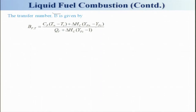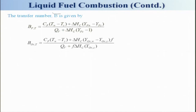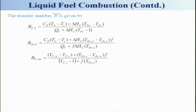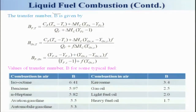The transfer number B_OXT is given by its respective expression, as is B_FOX. Typical values of the transfer number B for common fuels include: isooctane at 6.41, benzene, heptane, kerosene, gas oil, and light fuel. Octane has a slightly higher number and this value is around 1.7. Keep in mind this is inside a logarithm, so changes in the transfer number do not strongly affect the mass burning rate.